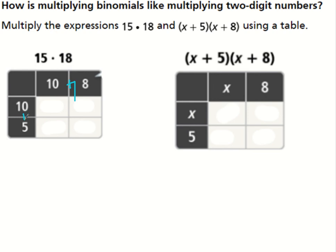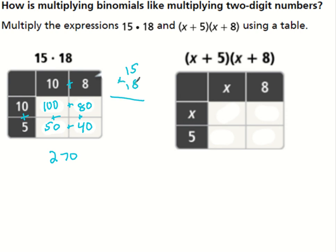We can take 18 as 10 plus 8, and 15 as 10 plus 5 — these are the same thing. So I'm multiplying by 10 and by 8, multiplying by 10 and by 8. Filling in the boxes: 10 times 10 is 100, 10 times 8 is 80, 5 times 10 is 50, 5 times 8 is 40. Adding all boxes together gives 270. If I do 15 times 18 the traditional way — 8 times 5 is 40, 8 times 10 is 80, 10 times 5 is 50, 1 times 5 is 5 — I still get 270. We're multiplying the same things, just set up a little differently.